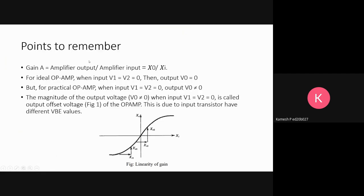Points to remember: Gain A equals amplifier output by amplifier input, X naught by Xi, either current or voltage. For ideal op-amp, when input V1 equals V2 equals zero, then output V naught must be zero.